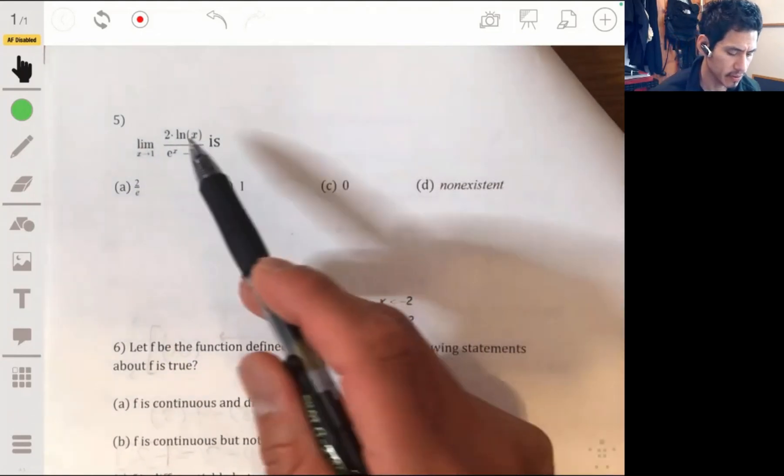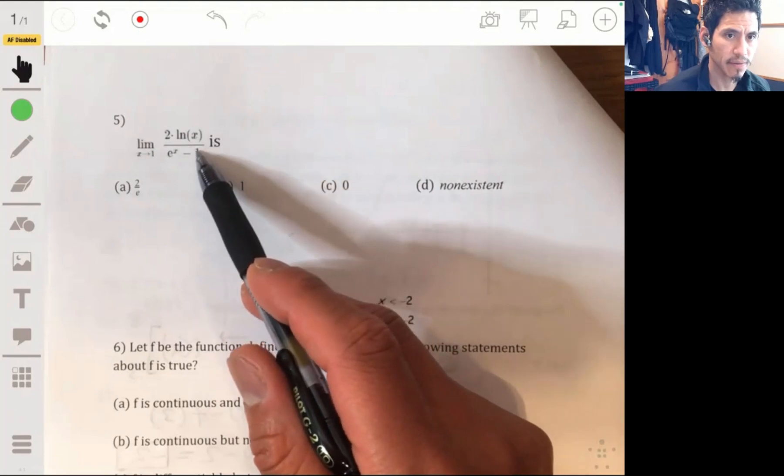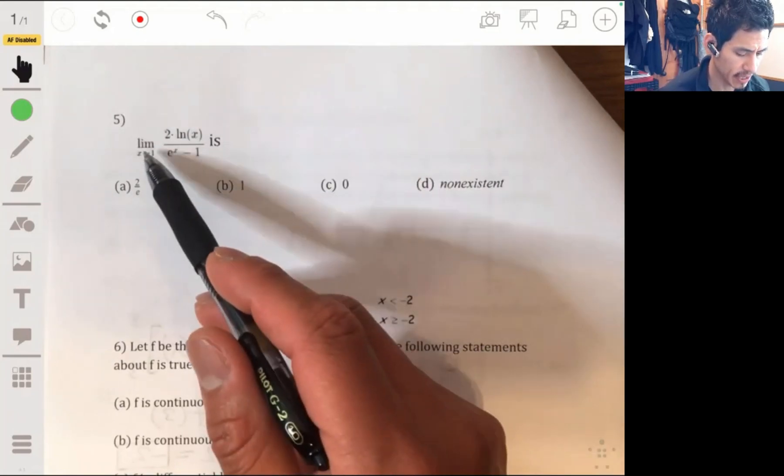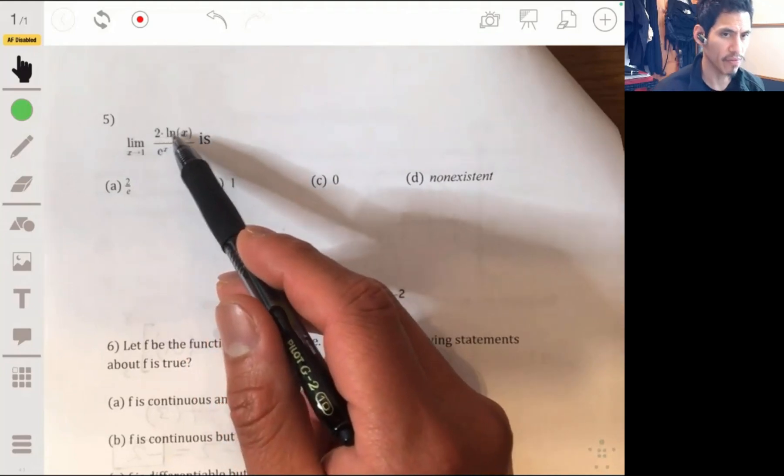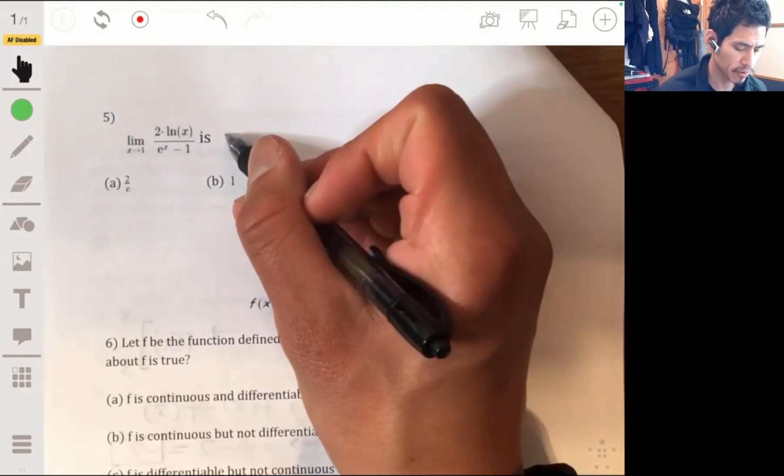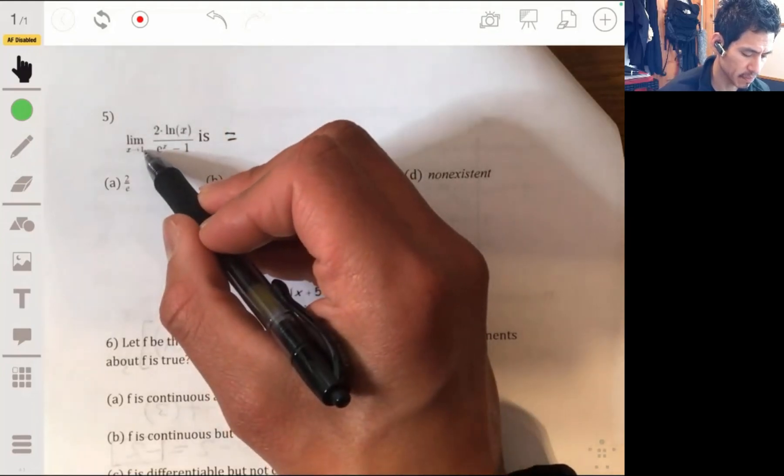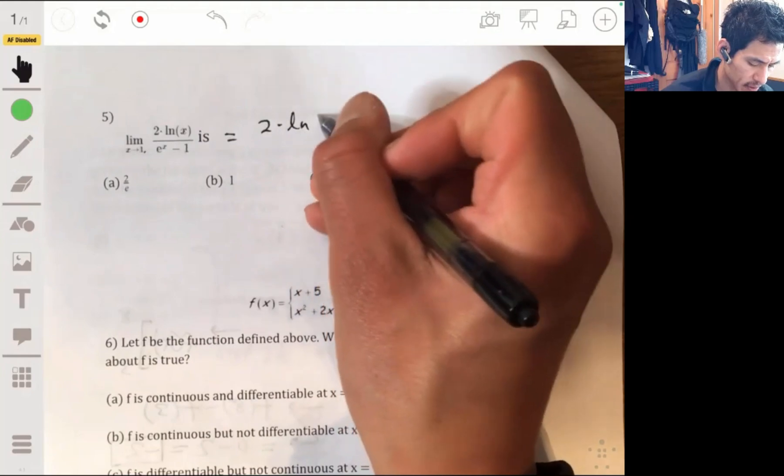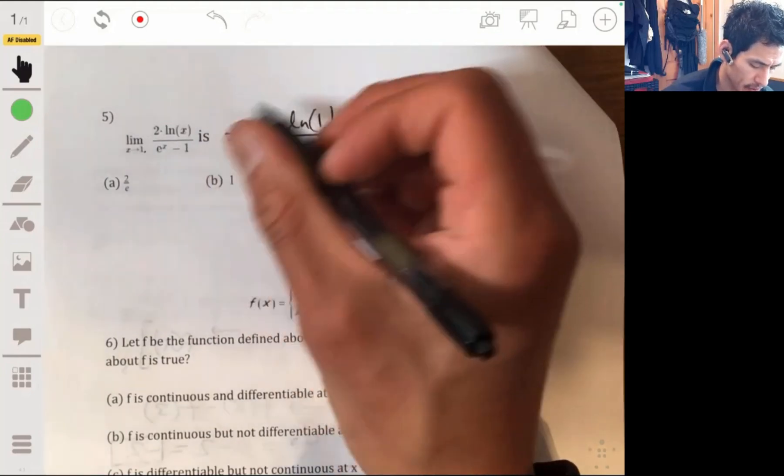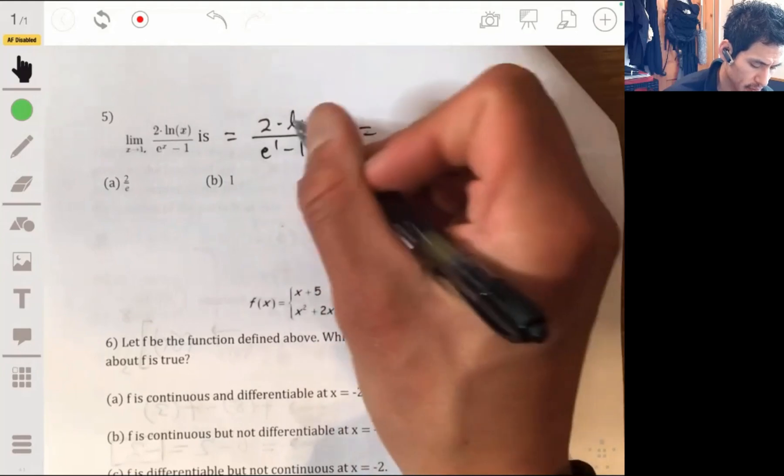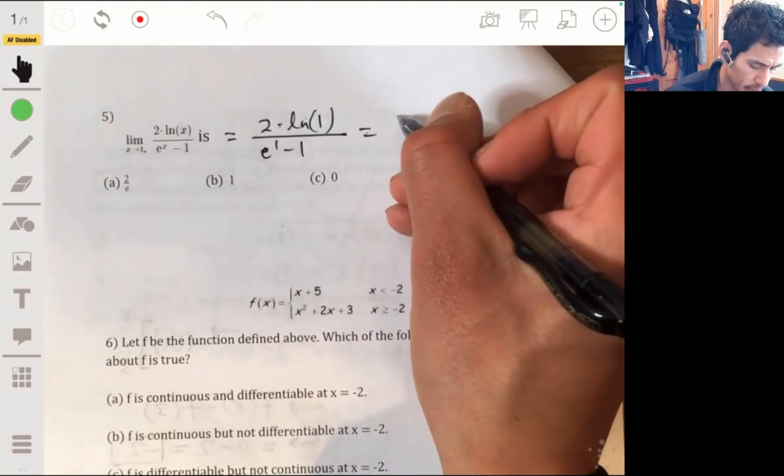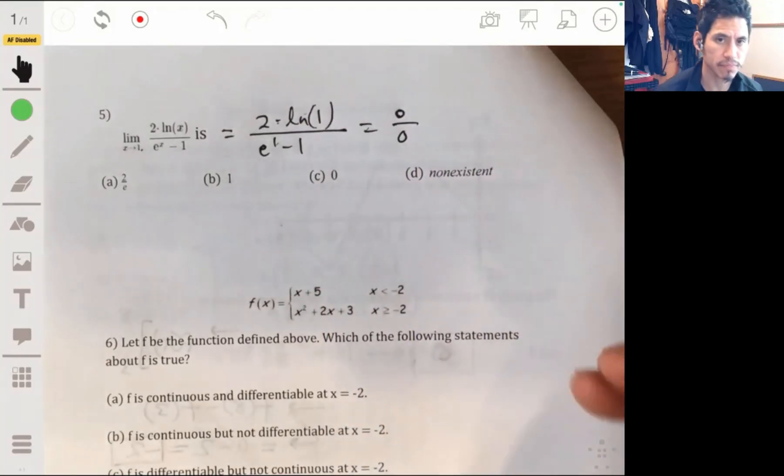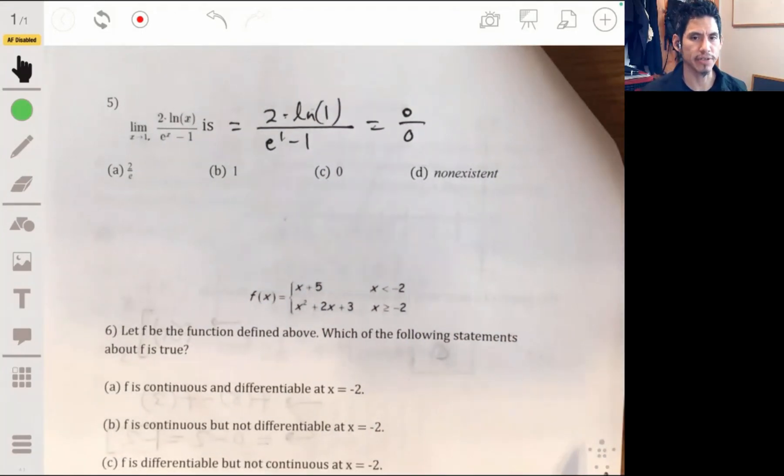Alright, number 5, the limit as x goes to 1 of 2 times the natural log of x over e to the x minus 1. So, we always want to first try direct substitution. So, we just plug in 1 first. So, we get 2 times the natural log of 1 over e to the 1 minus 1, which will be 2 times 0. So, we get 0 over 0. So, we have an indeterminate form.